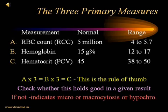In any given report, check whether RCC × 3 = hemoglobin, and hemoglobin × 3 = hematocrit (45). If this relationship does not hold, it indicates that the patient may have microcytosis, macrocytosis, or hypochromia. For example, if a patient has an RBC count of 3 million, we expect hemoglobin to be 9 grams and hematocrit to be 27. If that relationship does not hold, we must suspect microcytosis, macrocytosis, or hypochromia.